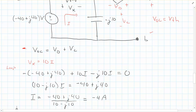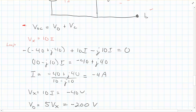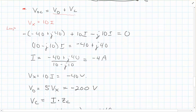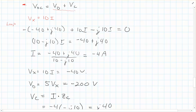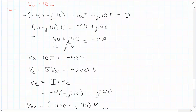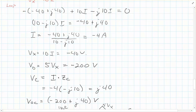But what am I trying to do here? I found this current, but I'm trying to find Vd and Vc. Well, Vx then is simply 10 times I, which is negative 40 volts. But then Vd is just 5 times Vx, so that's negative 200 volts. So we have one of the pieces we need — we've got Vd. Now similarly, Vc is just simply current times the impedance. Because there's no current in that other side, that's just going to be negative 4 times the impedance, which is negative J10, which equals J40. So the end story here is that the open circuit voltage is equal to negative 200 plus J40.